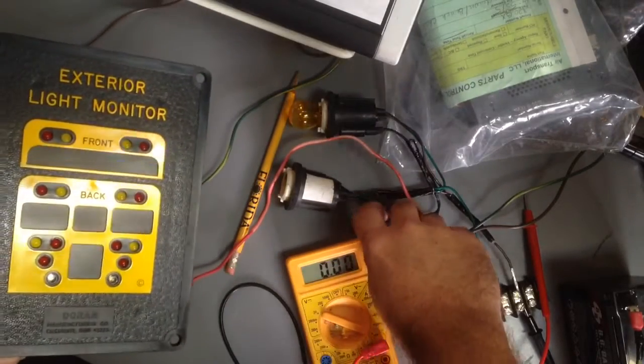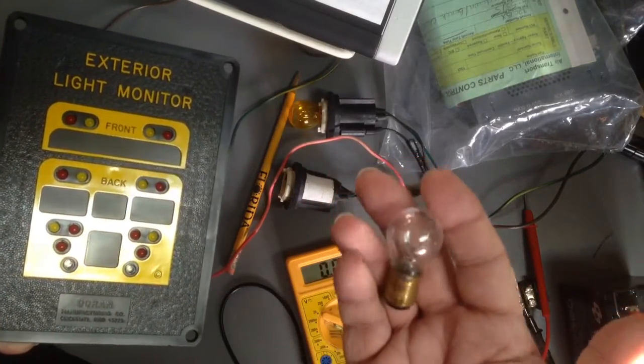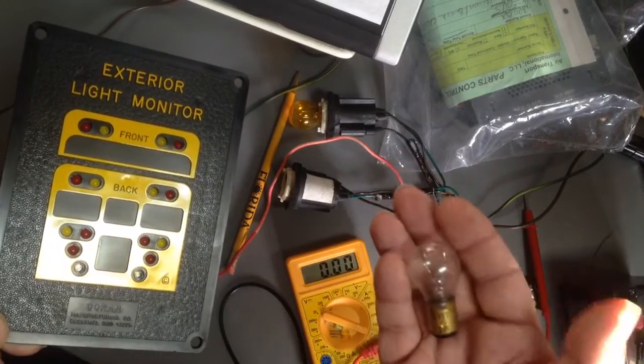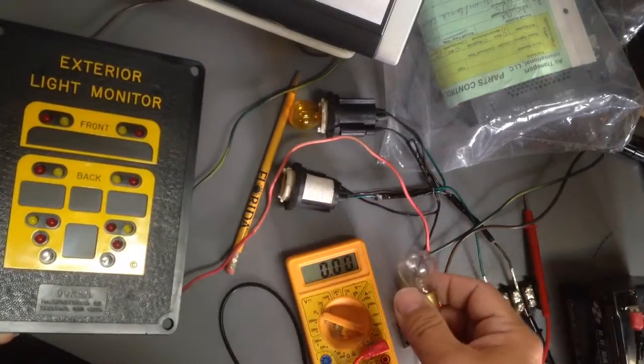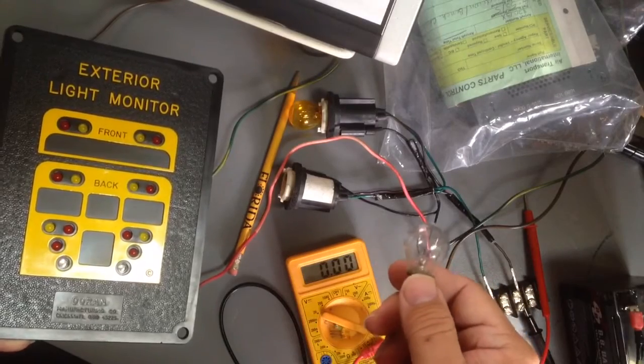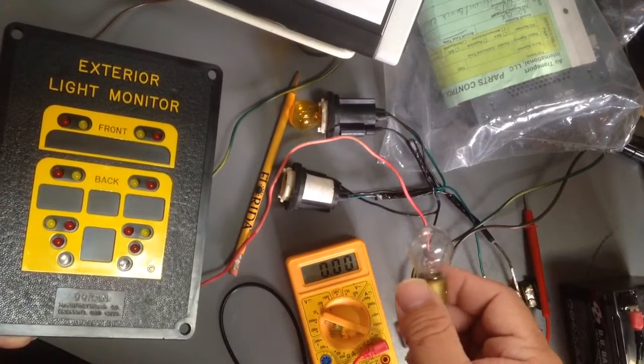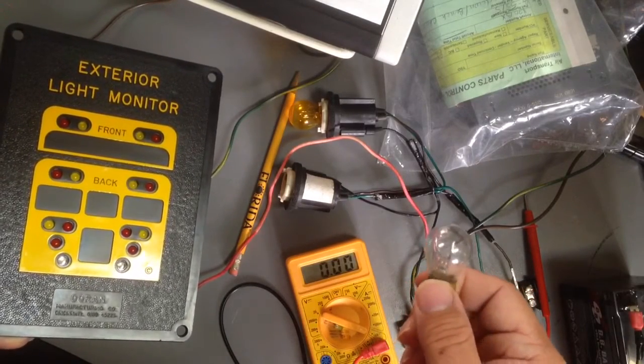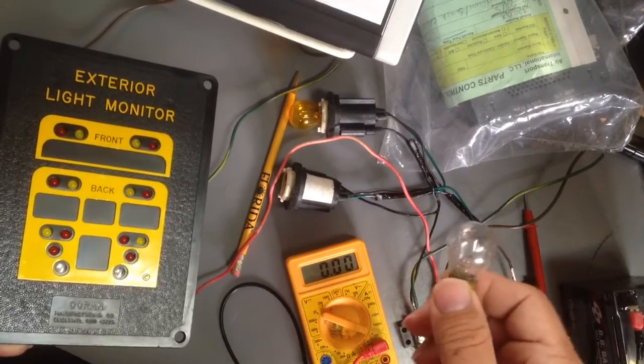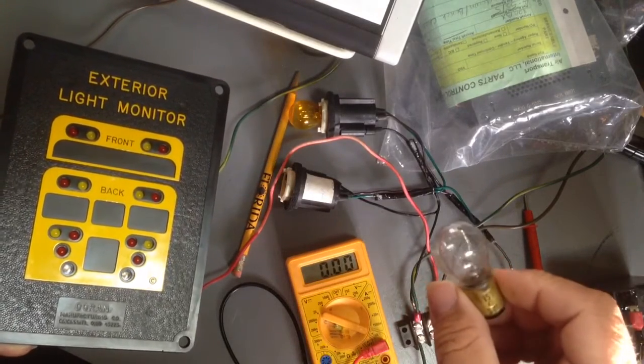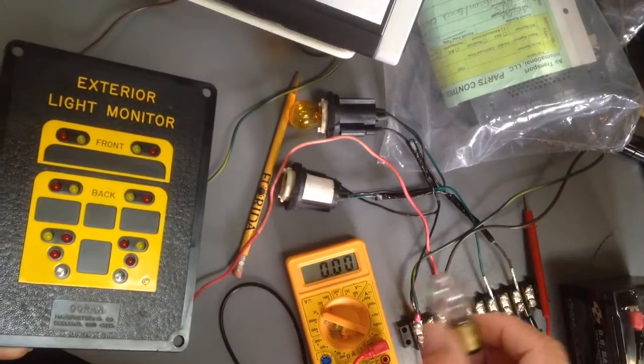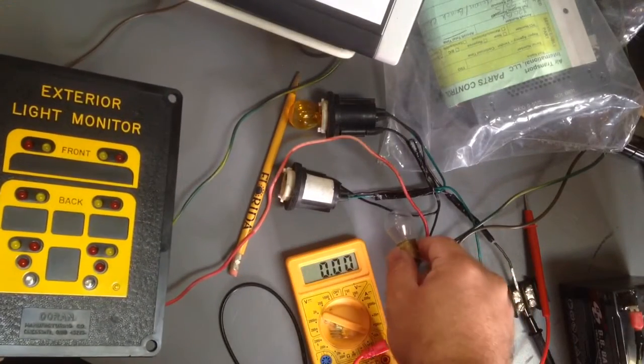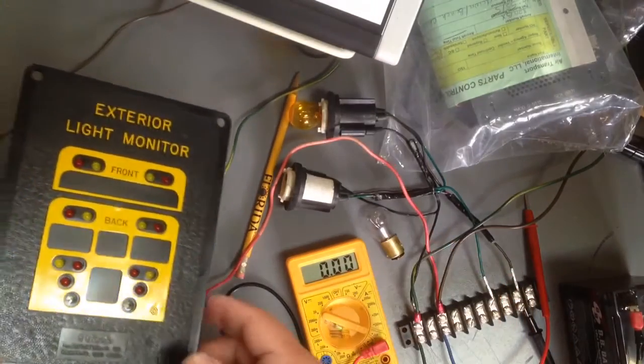So the ideal bulb for testing is the dual filament 1157 because you have the tail lamp low current side plus your stop lamp or warning lamp side or backup lamp filament in one bulb here that you can actually use as a test for that.